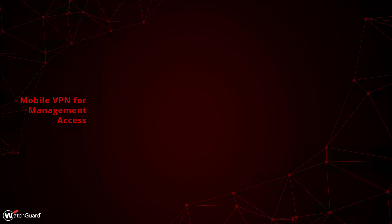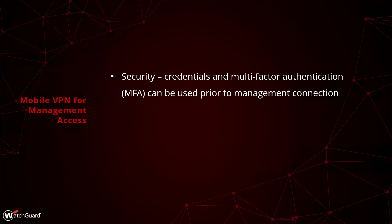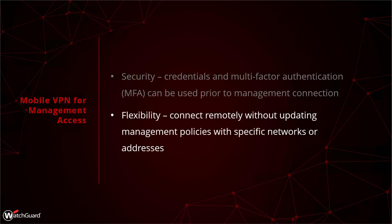Now let's talk about another option for management access that does not require you to input IP addresses for each of your management policies. You can use a mobile VPN to connect to these devices and then access them through the internal interface. One of the benefits to this is increased security — you're providing credentials before you even reach the management interface. On top of that, you can use MFA to protect those VPN connections, giving you an extra layer of security. It's also much more flexible because you do not have to update your management policies with the public IP of every office or every possible location you may need to connect from.